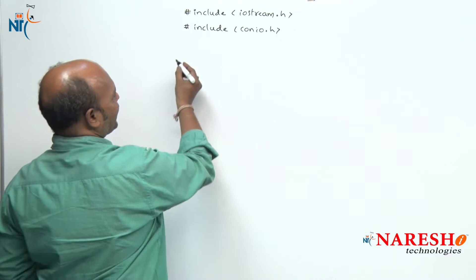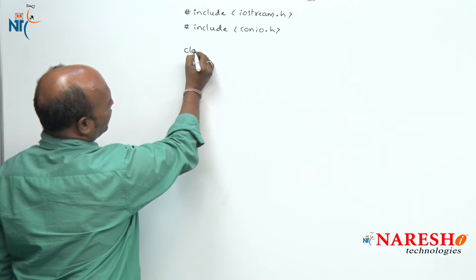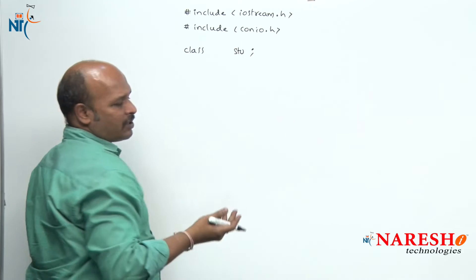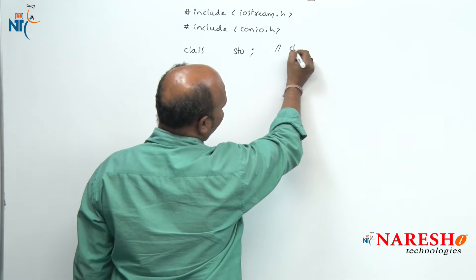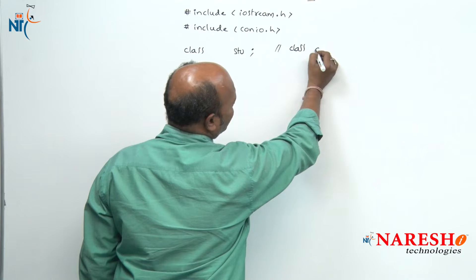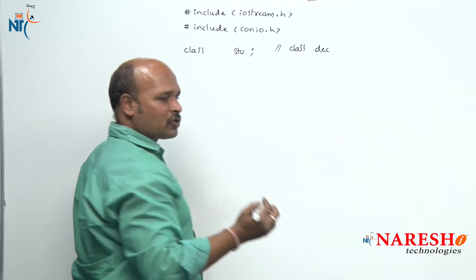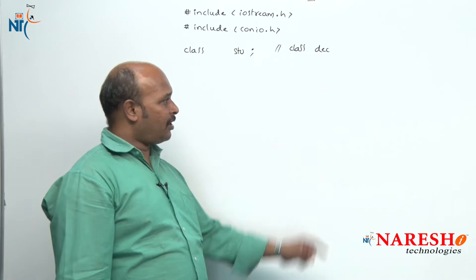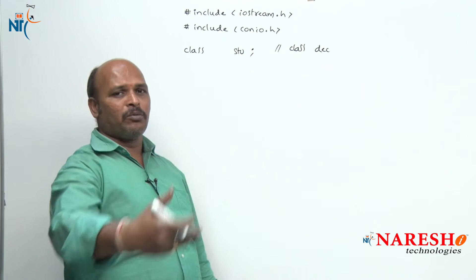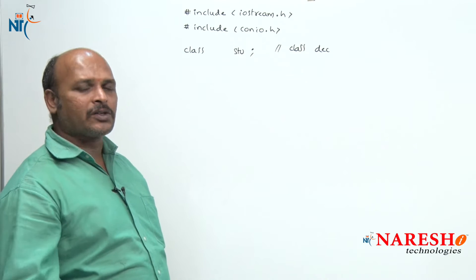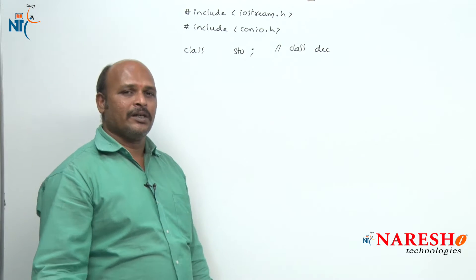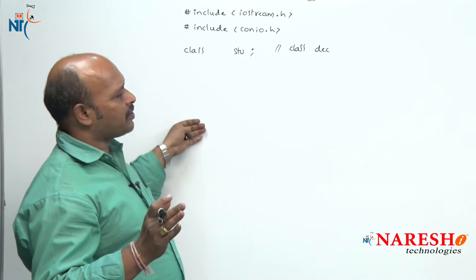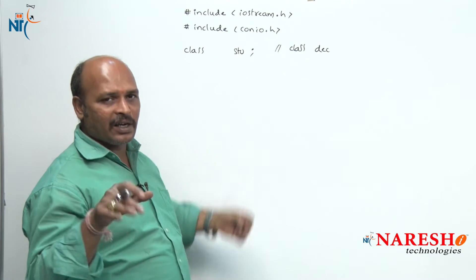Now I am going to start the class. Generally a class starts like: class stu — with a semicolon. This is called a class declaration, because in a class we have two stages: one is declaration and the second one is definition. When the body is also continued it is called definition. Class declaration is not mandatory when the body follows immediately.